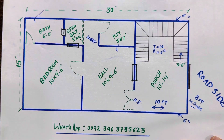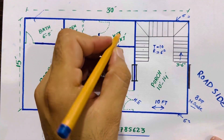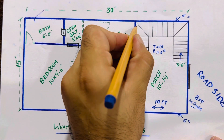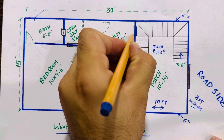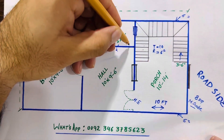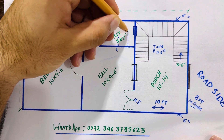This is a kitchen; size is 5 feet by 7 feet. You can also keep a window here for this kitchen. Let me make a sink here.